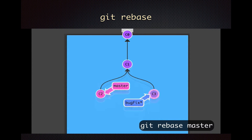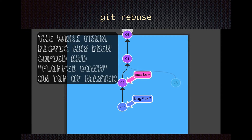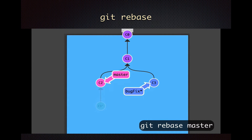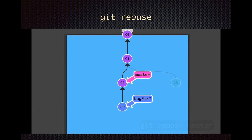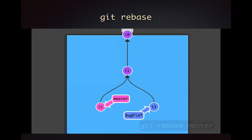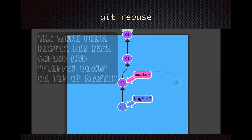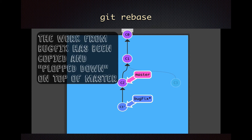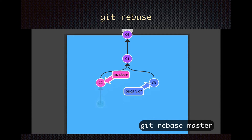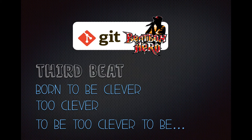I call it Git copy plop, because really that's what it's doing — it's copying the commits from one branch and plopping them down somewhere else. Here's what it looks like: we call 'git rebase master.' You can see how bug fix is brought down and we drop it on top of C2. We're in the bug fix branch, we Git rebase master, and we just replay C3 on top of C2 — copying it and plopping it down on top of master. Git copy plop.